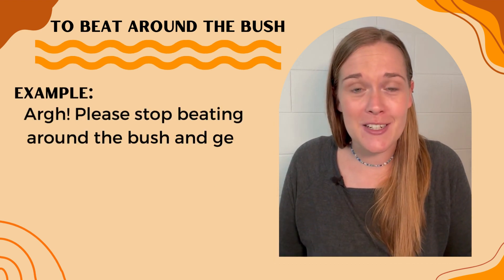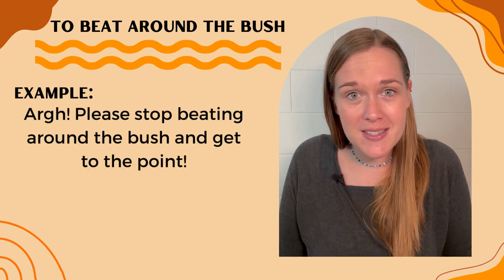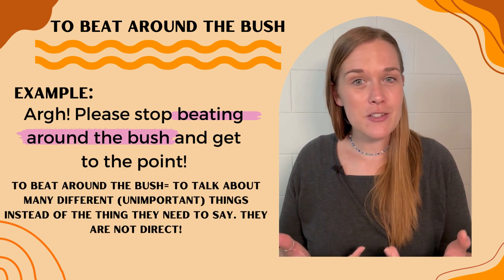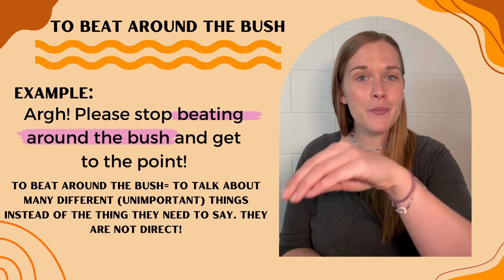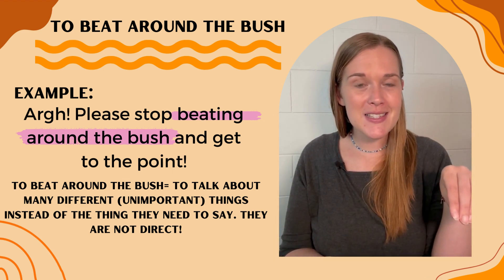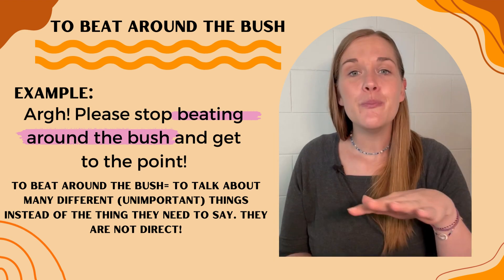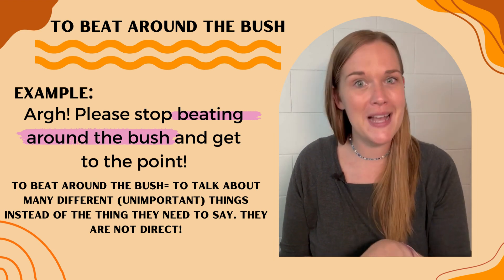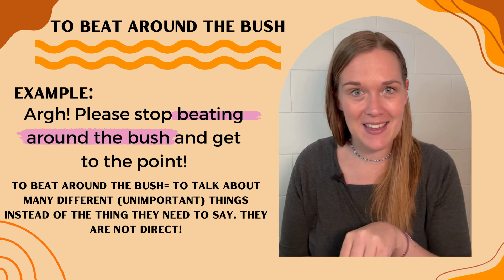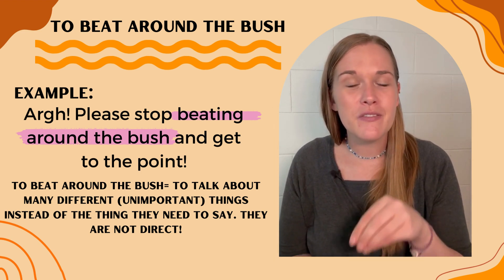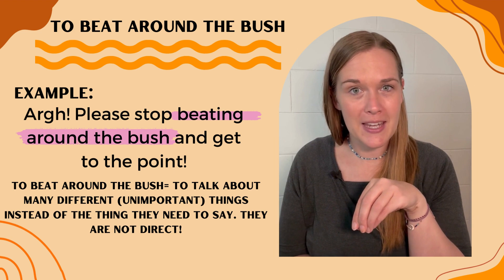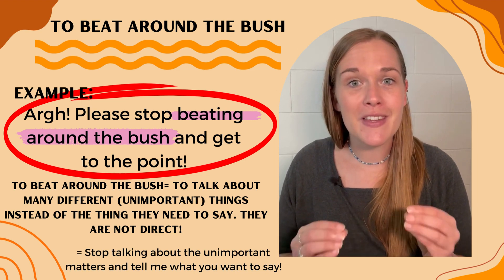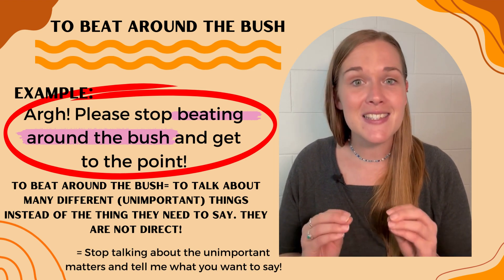Please stop beating around the bush and get to the point. What do you think it could mean? Well, if someone beats around the bush, typically they talk about many different things which are not usually important, because typically they are trying to avoid talking about the important matter — the thing that they actually need to say. So really, they are being very indirect with their communication. In this example sentence, it means: stop talking about the unimportant matters and tell me what you want to say.